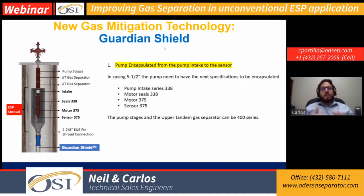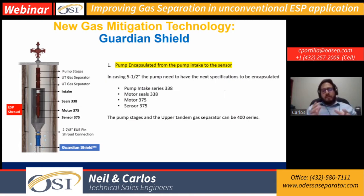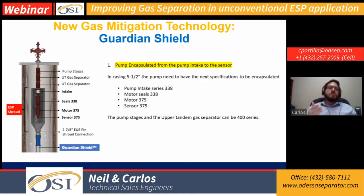This is the typical assembly for the Guardian Shield. We have an encapsulated system clamped on top of the intake, with two upper tandem gas separators to homogenize the gas phase, intake seals, and a motor. The motor is the largest part of the ESP, so we must maintain proper clearance between the shroud ID and the motor OD so fluid can pass through and cool the motor. In this case, we have a downsized motor from 4.56 to 3.75 inches, with a 27H connection.